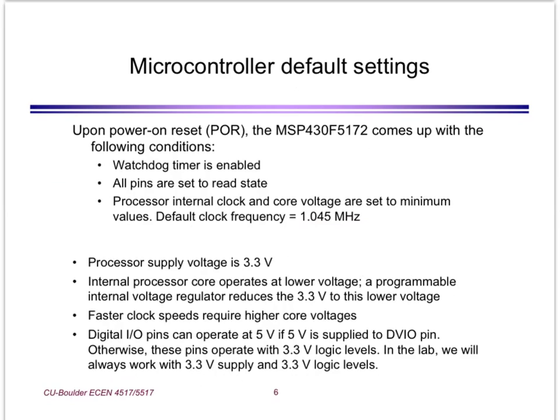We should also note that the main power supply for the microcontroller is 3.3V, so you would expect the IO logic levels to be 0 and 3.3V, and indeed that is what we will be using in the lab. There is an option to provide a higher voltage supply, up to 5V for the IO pins, but we will not do that.